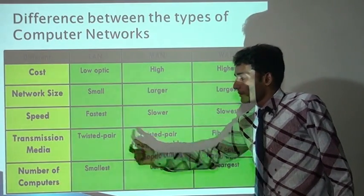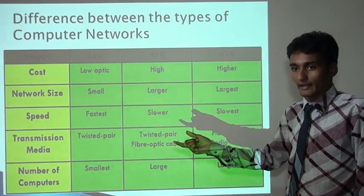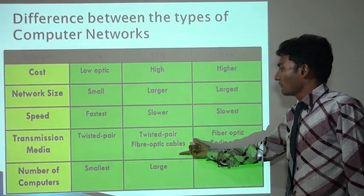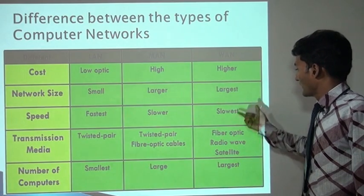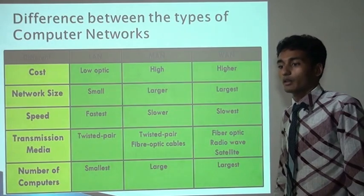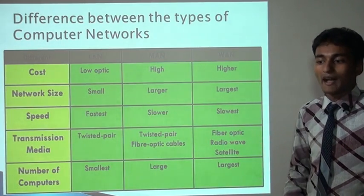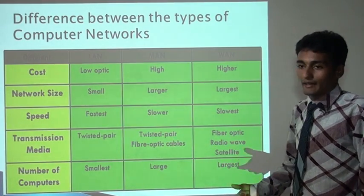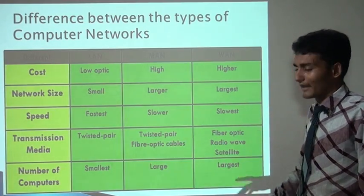Types of transmission media used in a computer network: twisted pair cable, coaxial cable, and optical fiber are used in LAN. Fiber optics are used in MAN type of network. Fiber optics, radio waves, and satellites are used in wide area network. The number of computers connected in LAN is small. In MAN, the number of computers is large. In WAN, the largest number of computers are connected through this type of network.